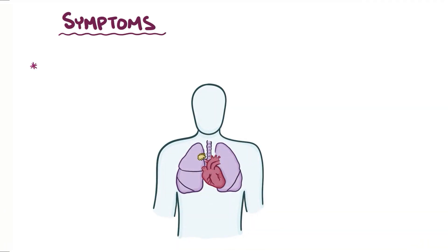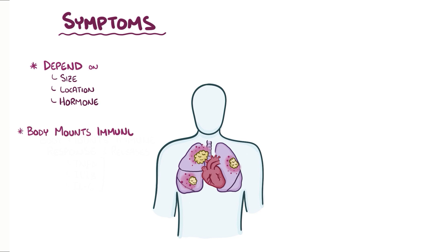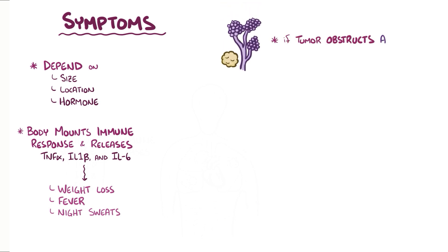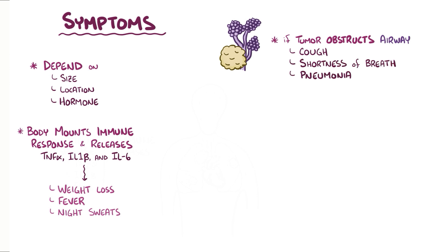Symptoms of lung cancer vary depending on the size and location of the tumor, whether or not it's spread to other organs, and whether or not it generates hormones — all of which is often predicted by the type of cancer. In response to the cancer cells, the body mounts an immune response, releasing chemokines like tumor necrosis factor alpha, interleukin-1 beta, and interleukin-6, which can cause weight loss, fevers, and night sweats. If the primary tumor physically obstructs the airway and presses on surrounding tissue structures, it can cause a cough, shortness of breath, and leads to pneumonia in the lung tissue behind the obstruction.